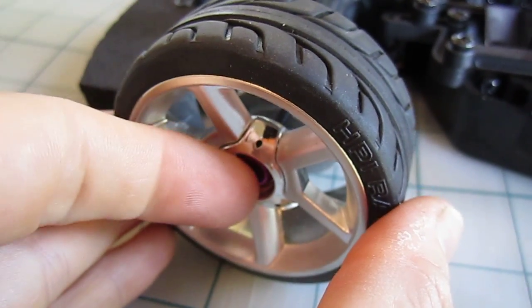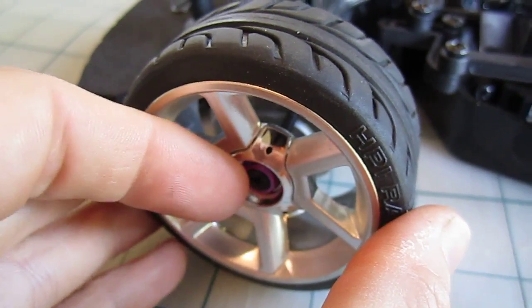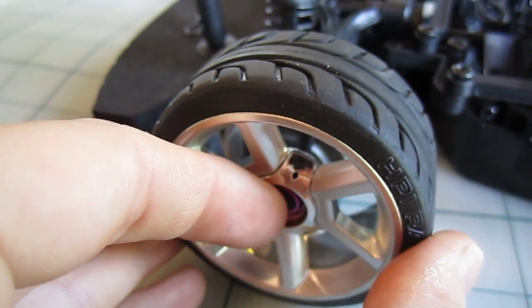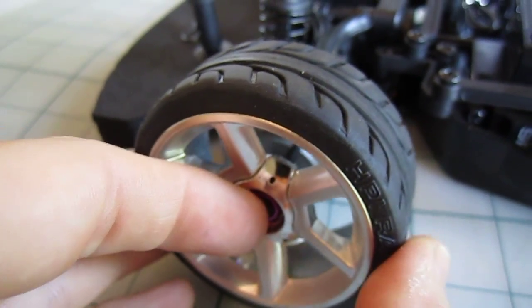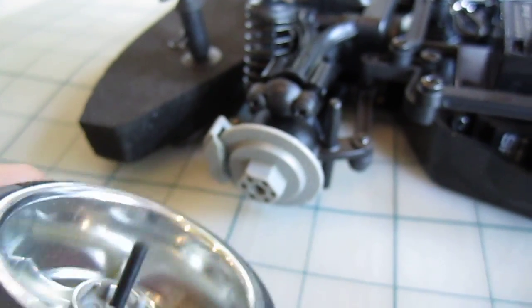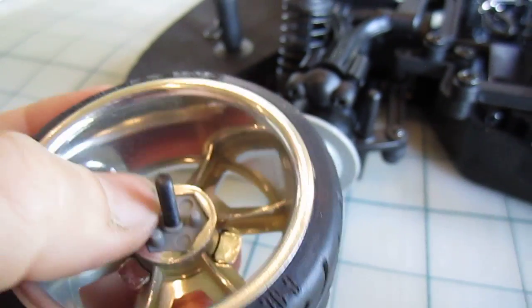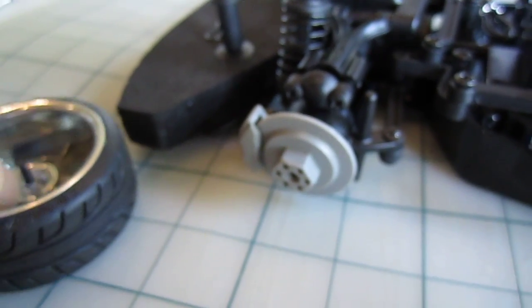You're going to first use your Phillips screwdriver to unscrew this screw on the outside of the wheel. It's going to look like this when you take it off. You want to make sure you keep this in there. Set that aside.